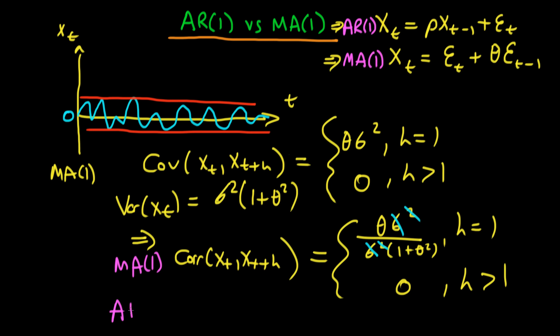Whereas for an AR(1) process, we derived the correlation structure, and the correlation between X_t and X_{t+h} was what we found to be equal to ρ^h, where ρ is the constant which we find in our AR(1) process above here.